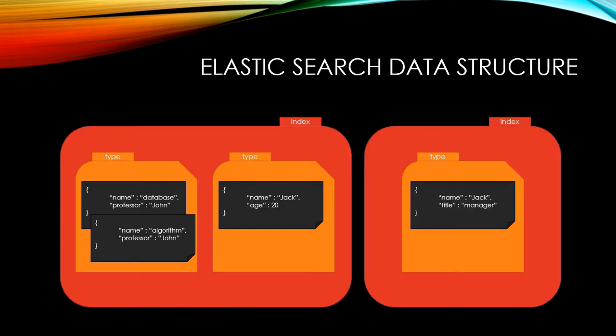Here is the data structure of Elasticsearch. Each index has types, and each type has multiple documents. Documents are in JSON format, and you can see that one type has multiple documents sharing the same properties.